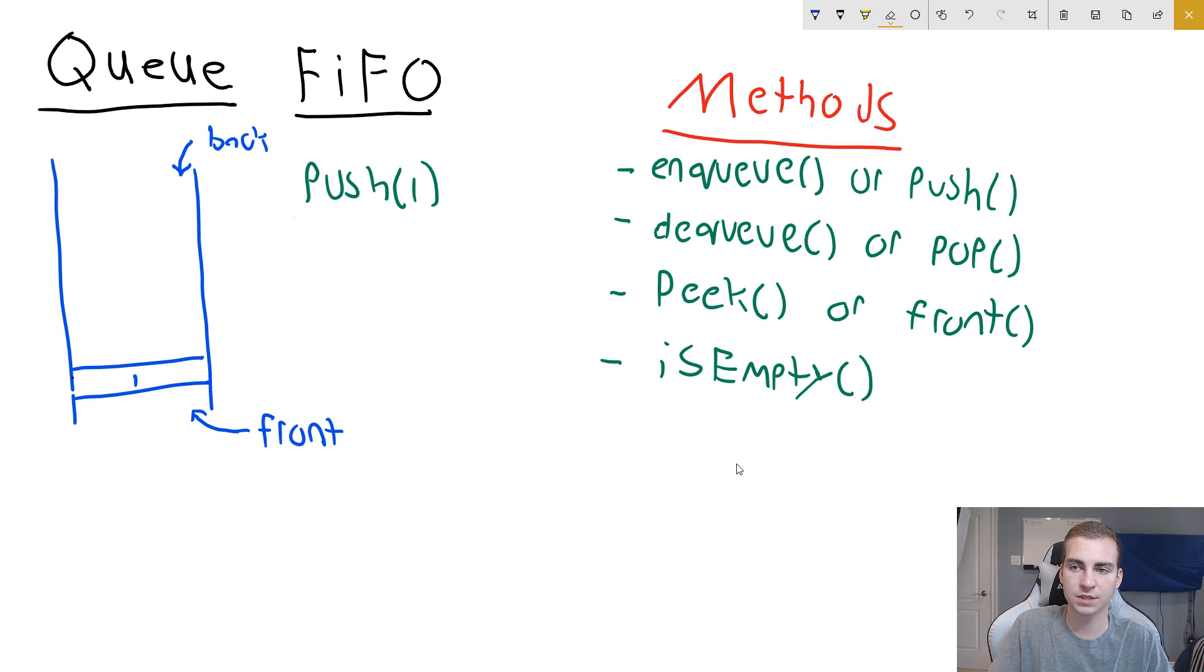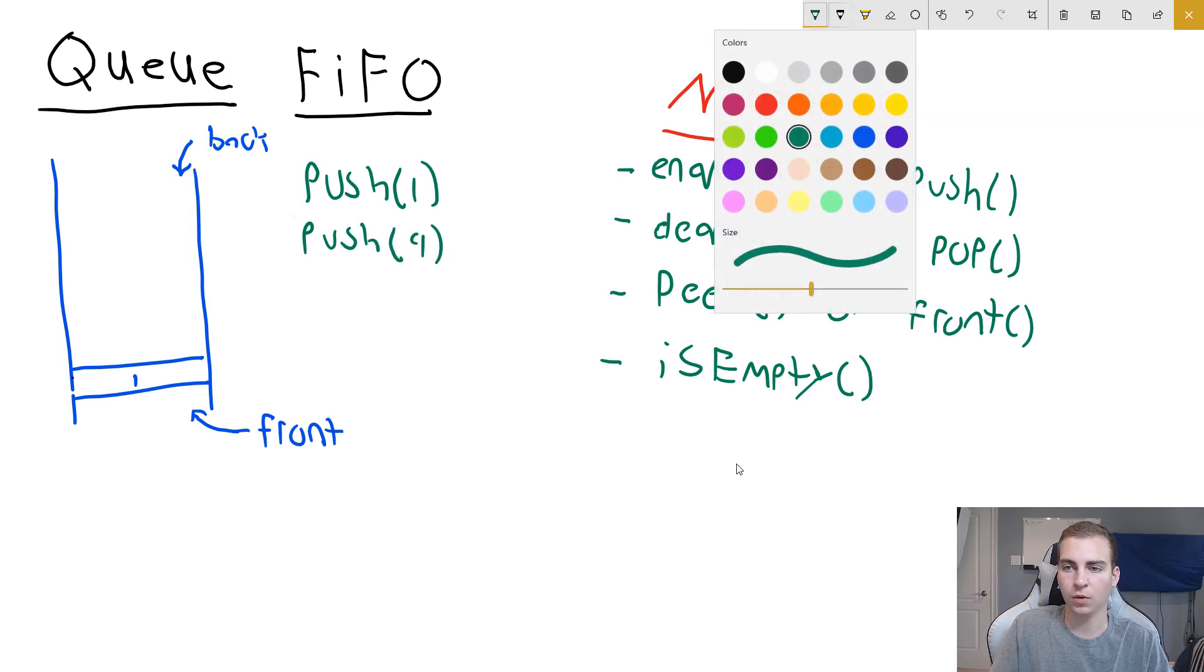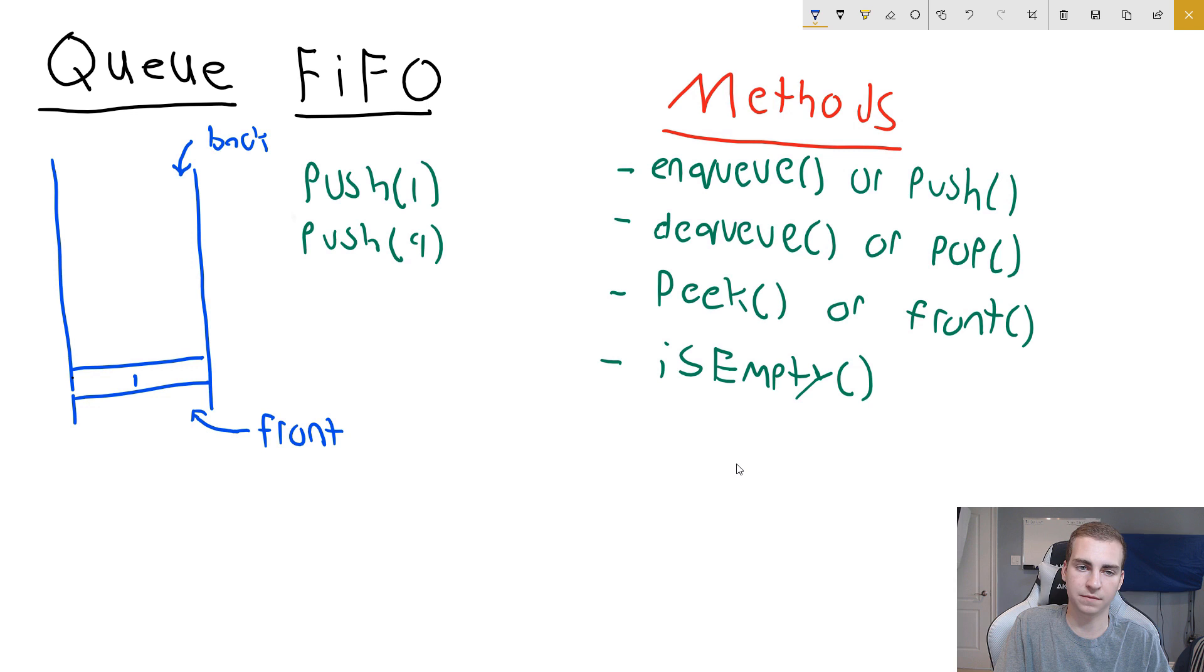Now let's push another item onto our queue and see how that works. If I go ahead and push now the item four onto our queue, well the exact same thing happens. It comes in from the backside and then we see it here as four.